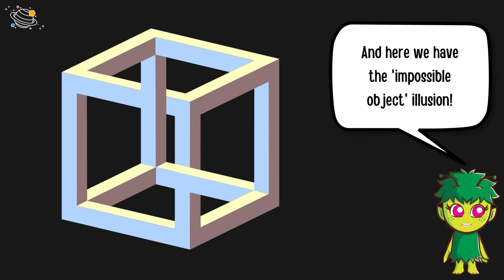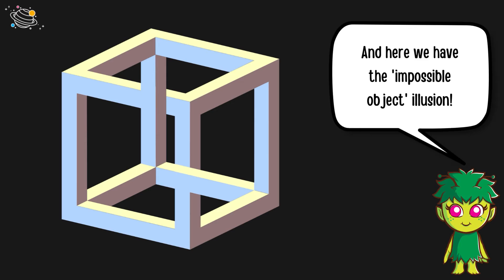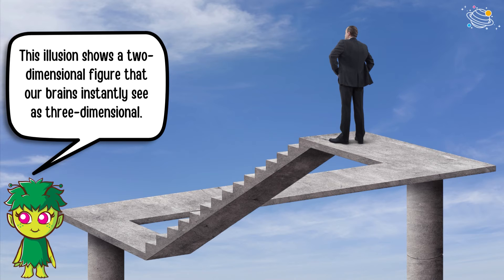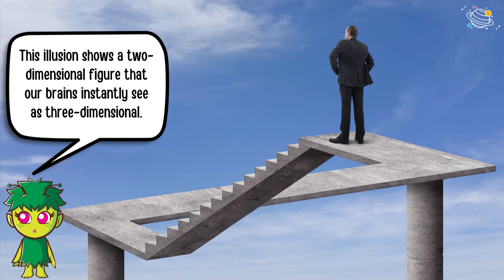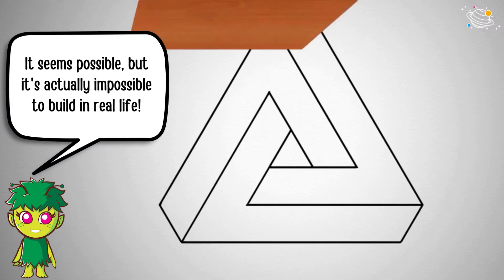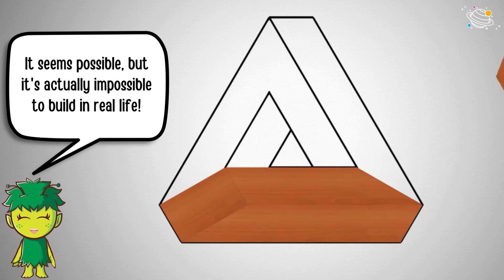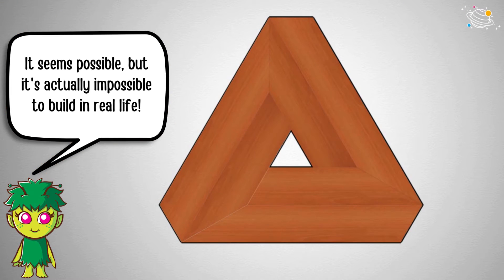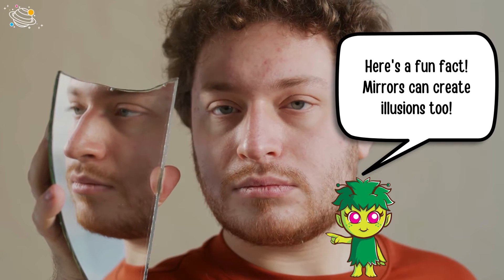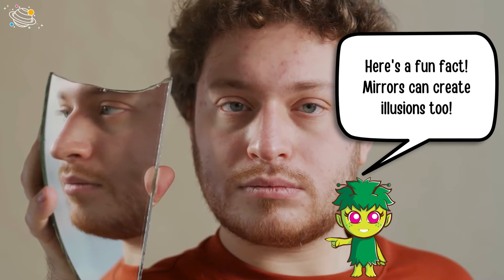Here we have the impossible object illusion. This illusion shows a two-dimensional figure that our brains instantly see as three-dimensional. It seems possible, but it's actually impossible to build in real life.